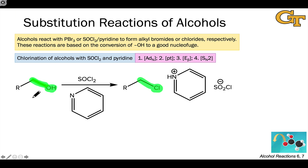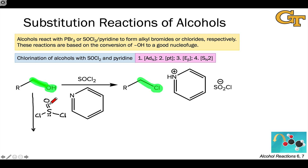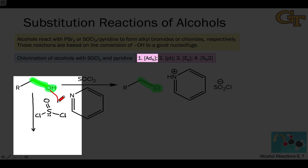SOCl2 is still a great electrophile — it's a sulfur atom connected to oxygen (a highly electronegative element) as well as two chlorines, which have the potential to act as leaving groups. Within SOCl2, there is an S=O double bond, which is highly polarized since oxygen is more electronegative than sulfur. This means the sulfur atom is electrophilic and amenable to nucleophilic addition by the alcohol hydroxyl, which once again acts as the nucleophile toward the electrophilic sulfur atom.